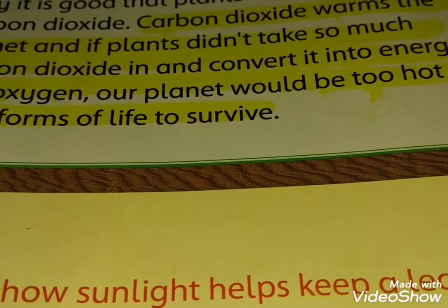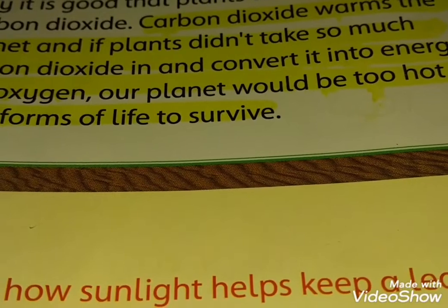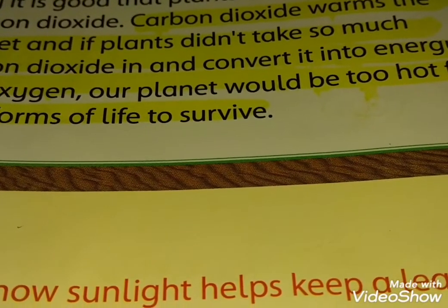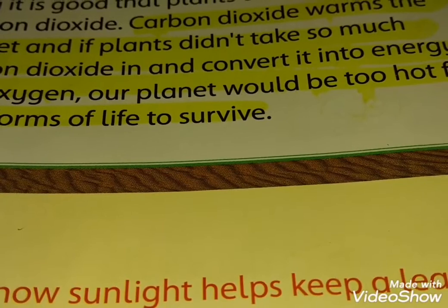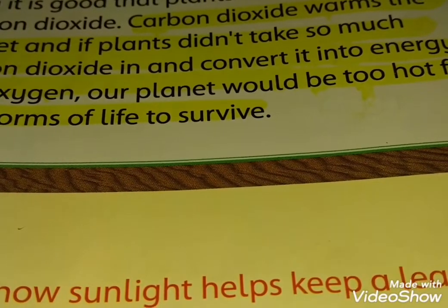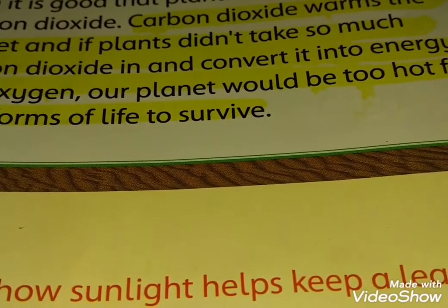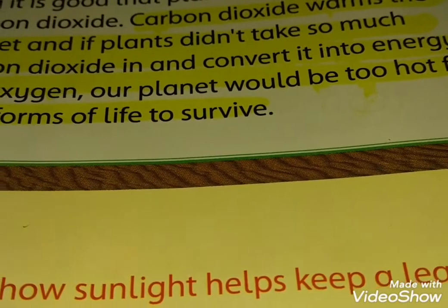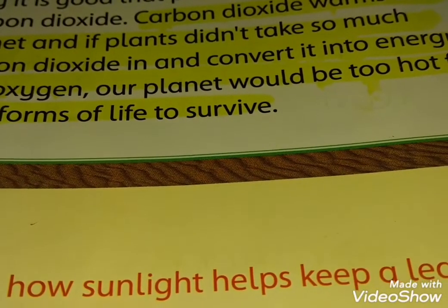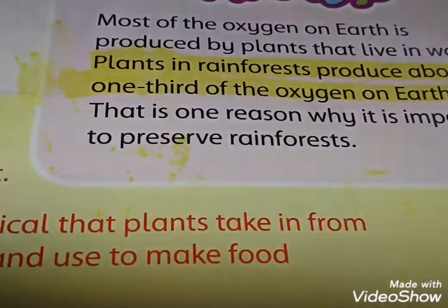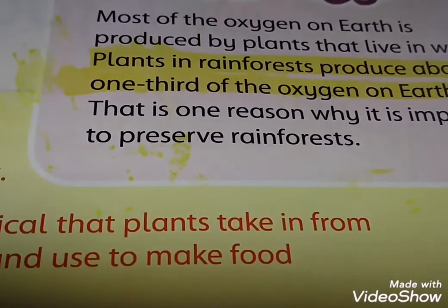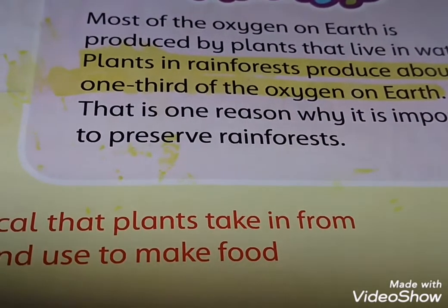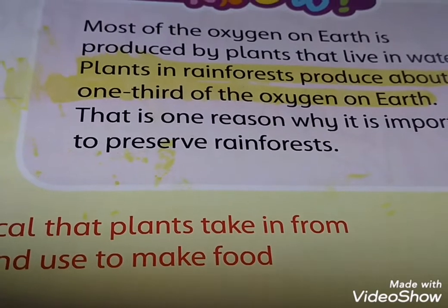Carbon dioxide gas warms the planet. If plants did not take so much carbon dioxide in and convert it into energy and oxygen, our planet would be too hot for most forms of life to survive. Plants in rainforests produce about one third of the oxygen on Earth.